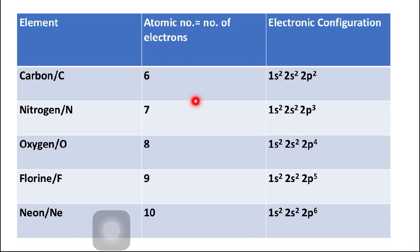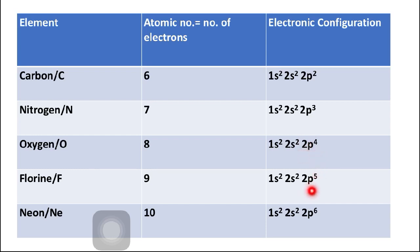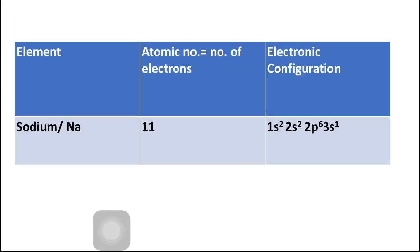The next five elements progressively fill the 2P sub-shell. Carbon is 1S² 2S² 2P², nitrogen's last sub-shell is 2P³, oxygen's is 2P⁴, fluorine's is 2P⁵, and neon's is 2P⁶. Once 2P is completely filled, additional electrons start filling the 3S sub-shell. Sodium has atomic number 11 and 11 electrons, giving the configuration 1S² 2S² 2P⁶ 3S¹.